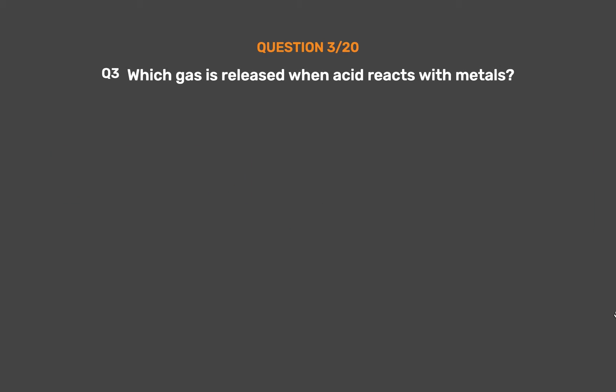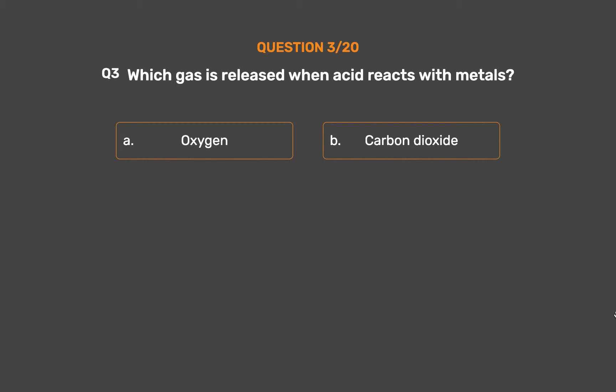Question number 3. Which gas is released when acid reacts with metals? Option A: Oxygen. Option B: Carbon dioxide. Option C: Hydrogen.